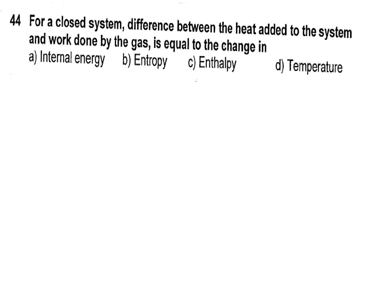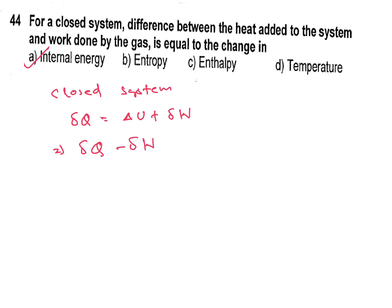The question is: for a closed system, the difference between the heat added to the system and work done by the gas is equal to the change in its internal energy. For a closed system, we know: δQ = δU + δW. So this question asks for the difference between heat added to the system and work done by the gas, which is δU — the change in internal energy.